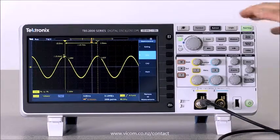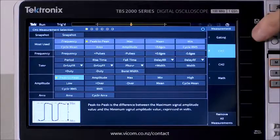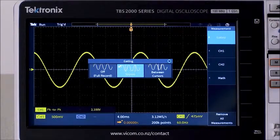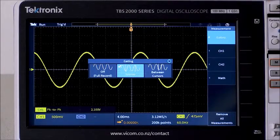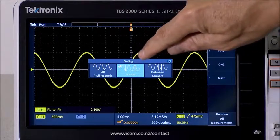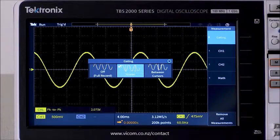I'm going to select the measurements from the measurement menu. First, let's check the gating. Gating determines which sample points are used to calculate the measurement. For this example, we'll use screen gating. This will use the sample points on the screen to calculate the measurements.